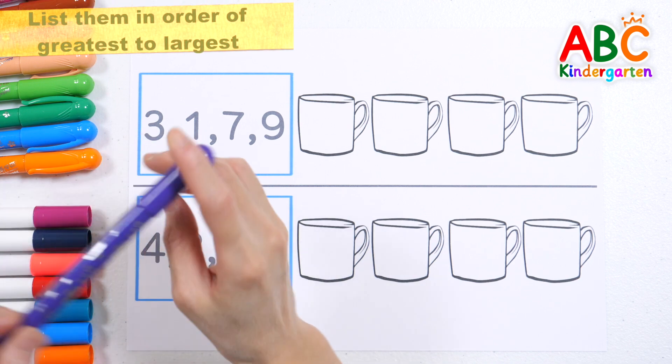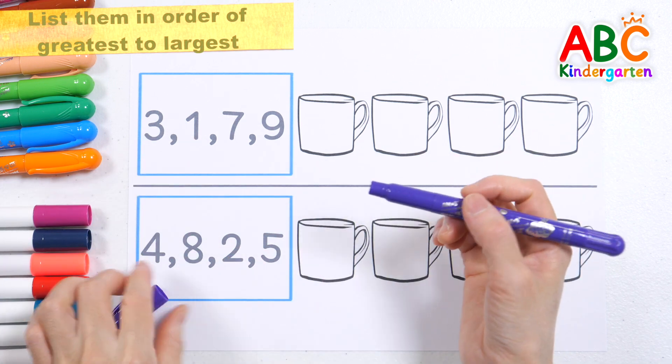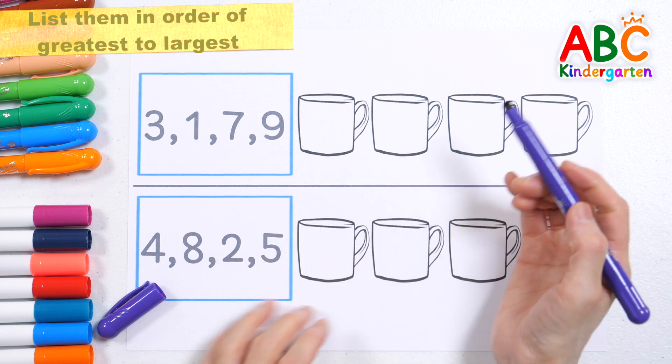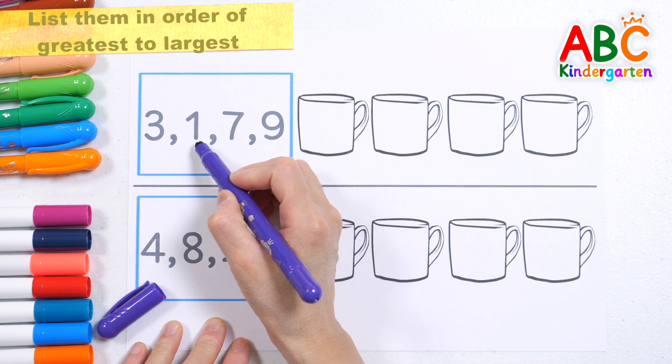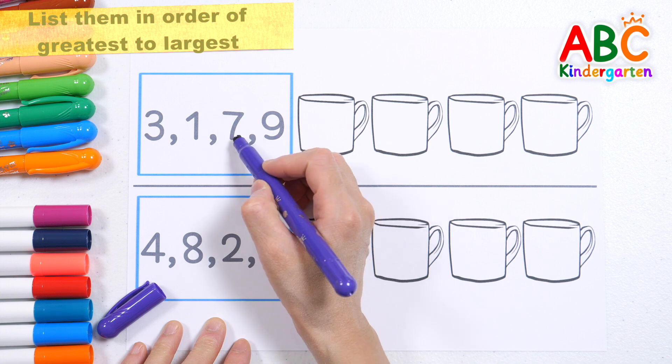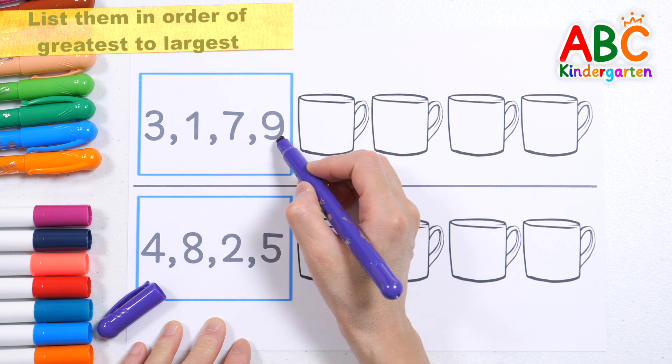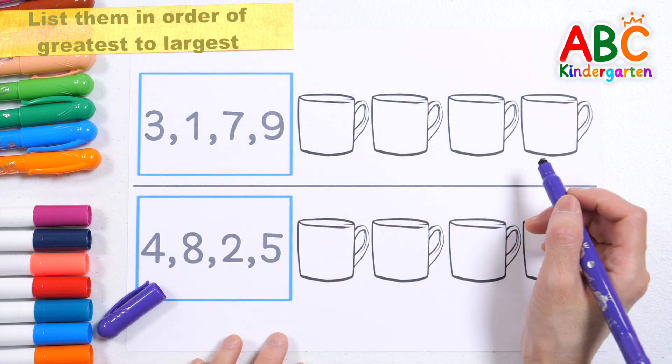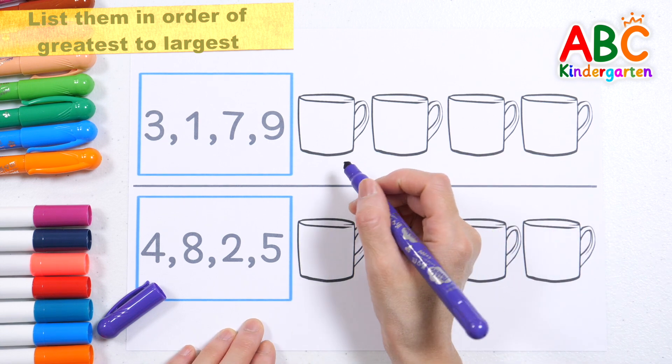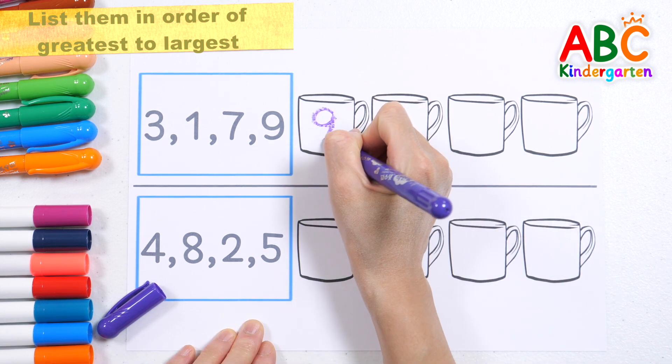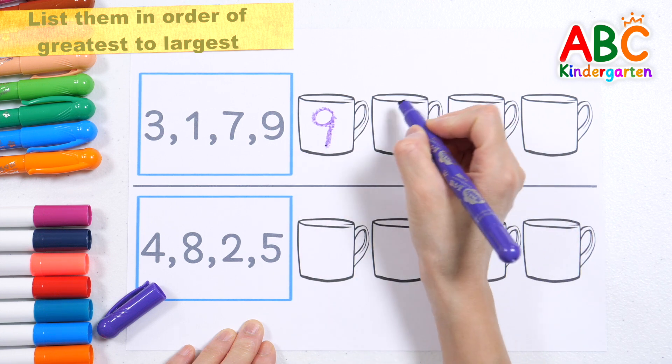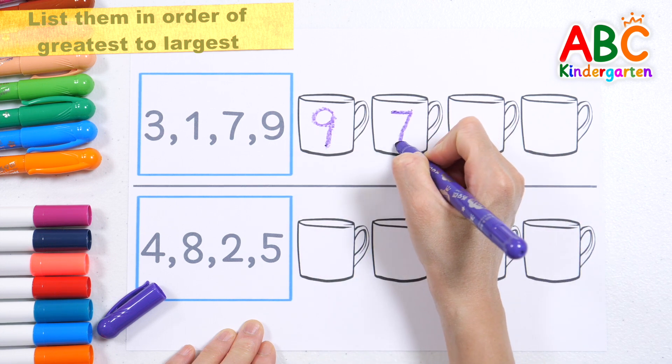Write the numbers in order from largest to smallest. Five, three, one, seven, nine. Nine. Seven.